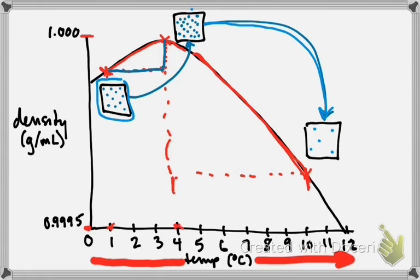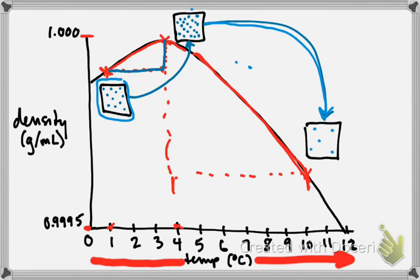Something strange happened with the drawing tool — a mysterious interlude — but let me summarize what the three frames show. I started with medium-crowded particles, then the curve said density went up so the particles got more crowded, then the graph said density fell so the particles got less crowded and spread out. That's what the graph is telling me — that's the story about how things work in the world.